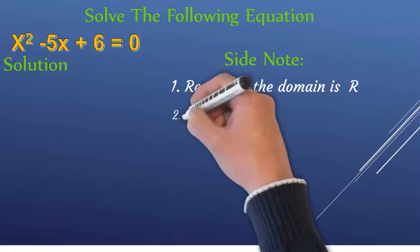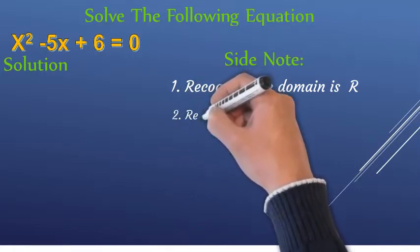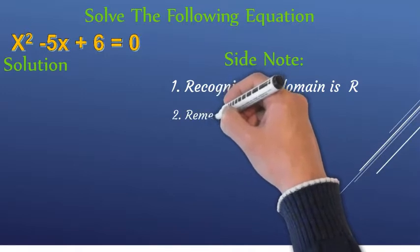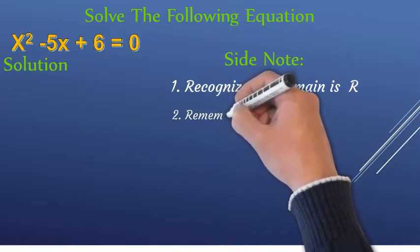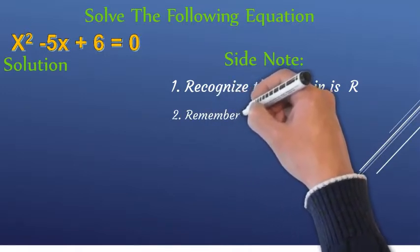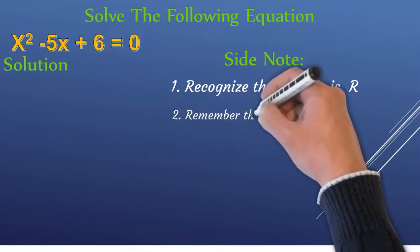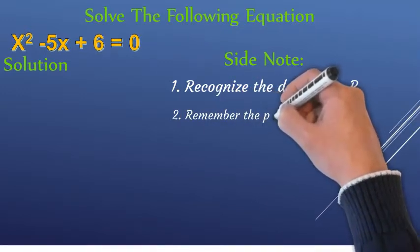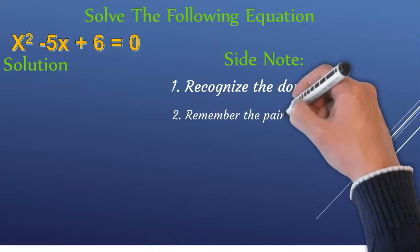The coefficient is 1, and 1 times 6 is 6. We have to find the factors of 6, given that the coefficient is 1.